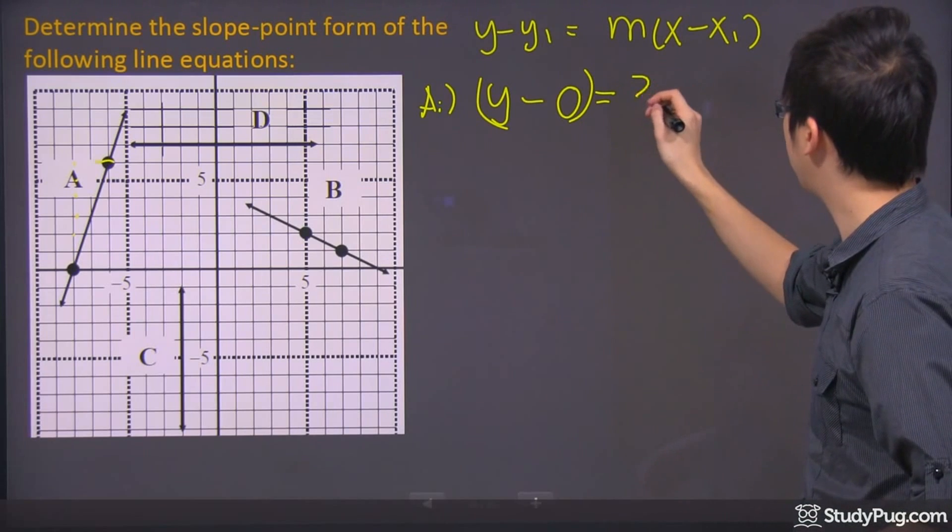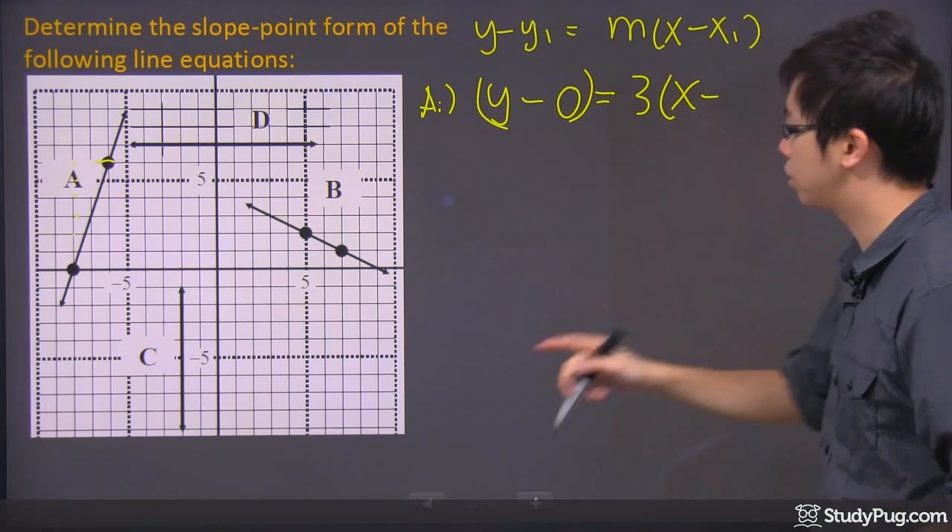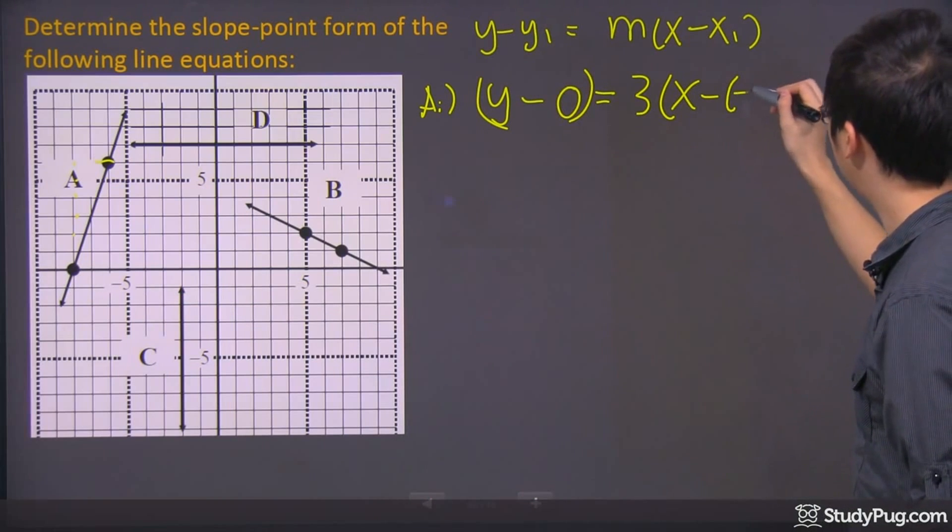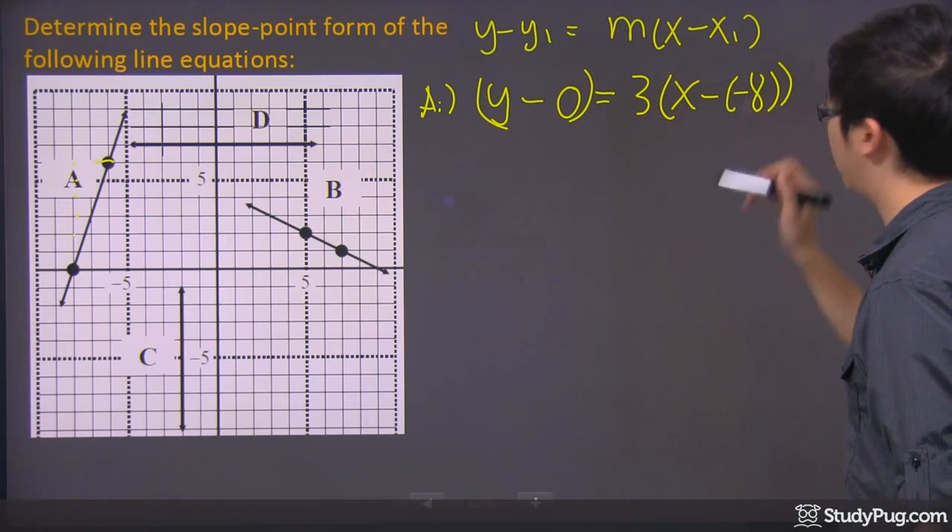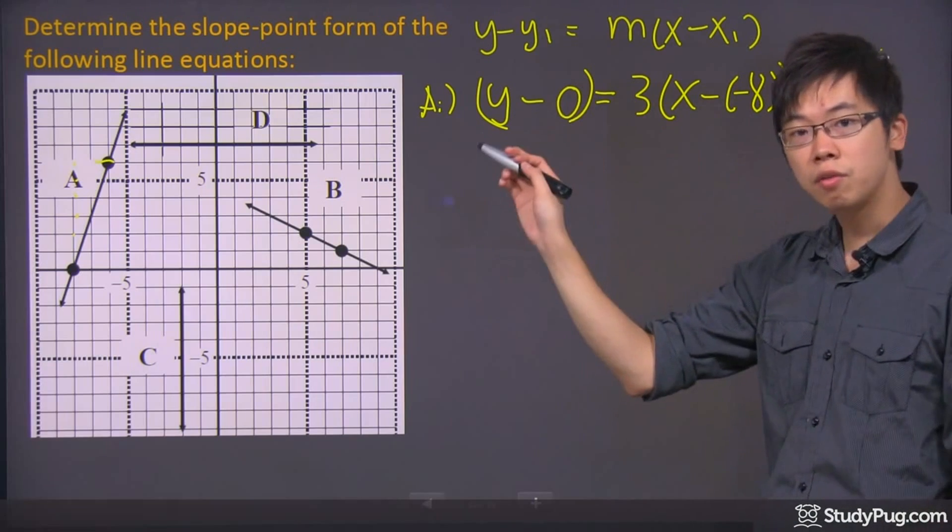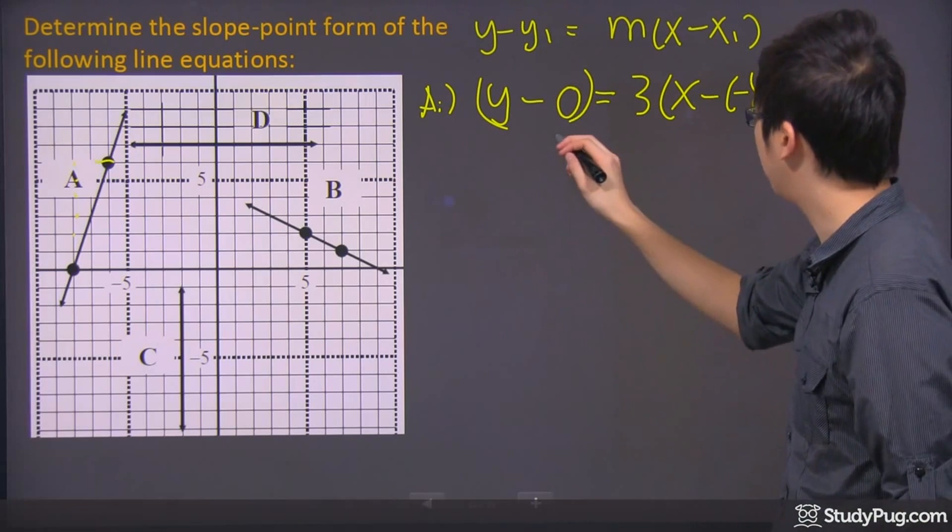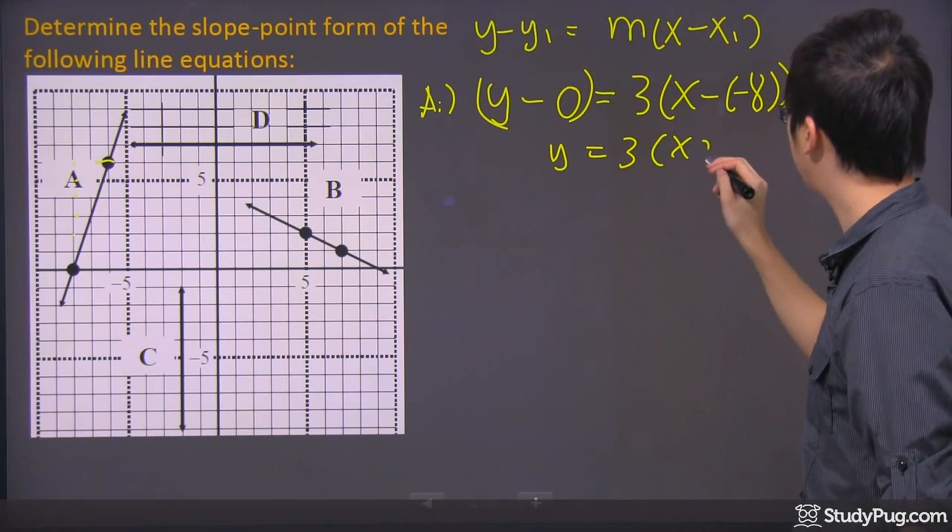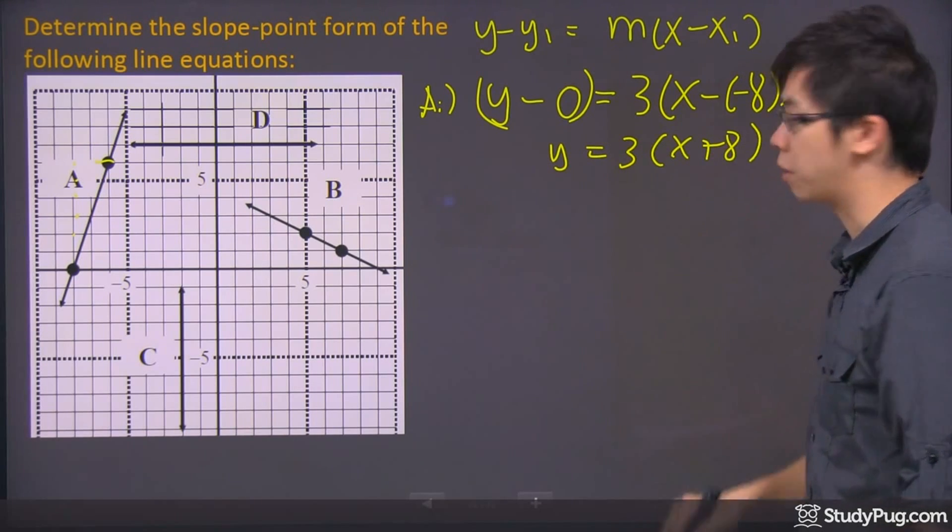So we're going to have a slope of 3 and with the x minus a negative 8. So technically it's just going to be a positive 8. Do a little bit of simplification right here. Usually that's what they're looking for. But if you're subtracting 0, you should just remove that. So it would just be y equals 3 times x plus 8 as your final answer for this one.